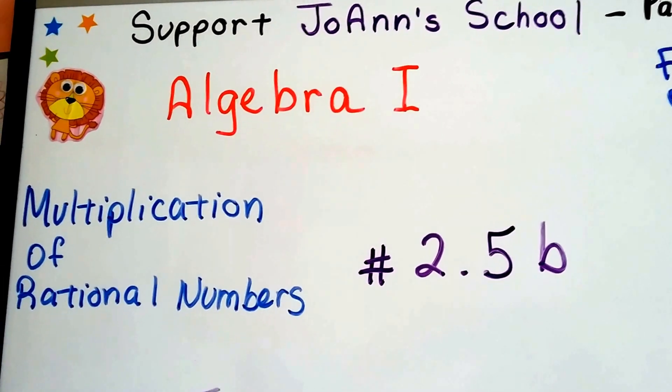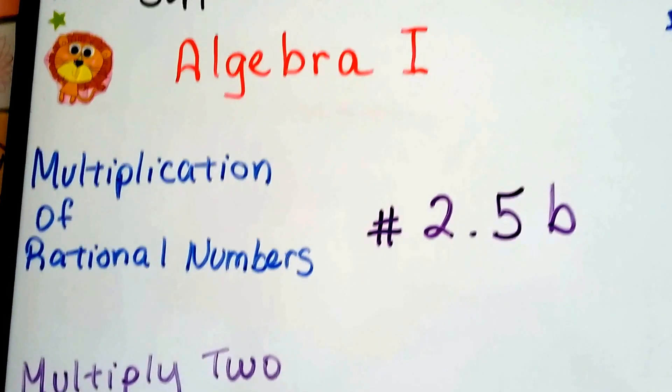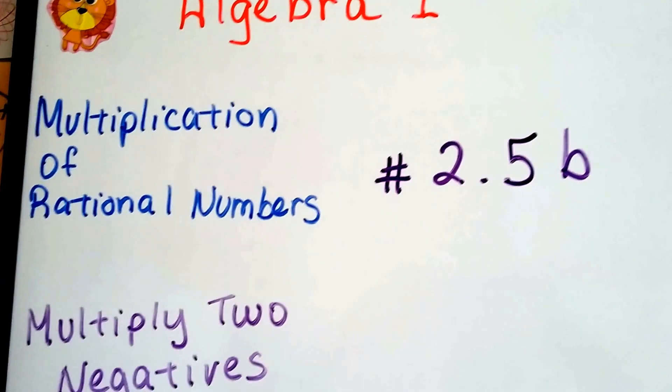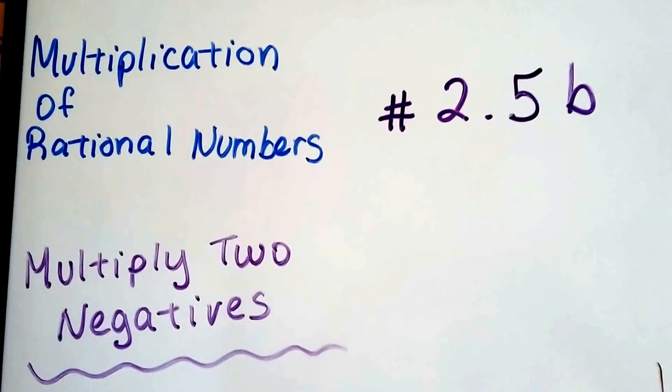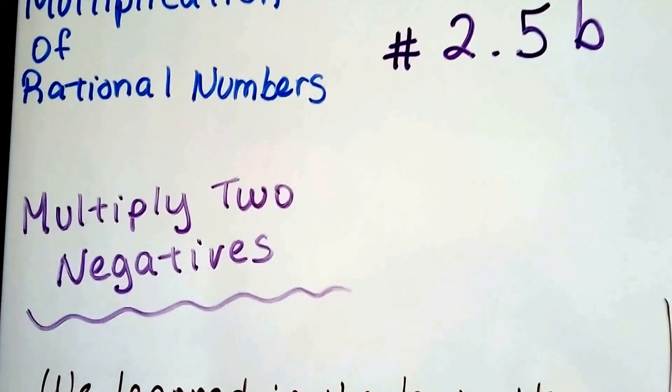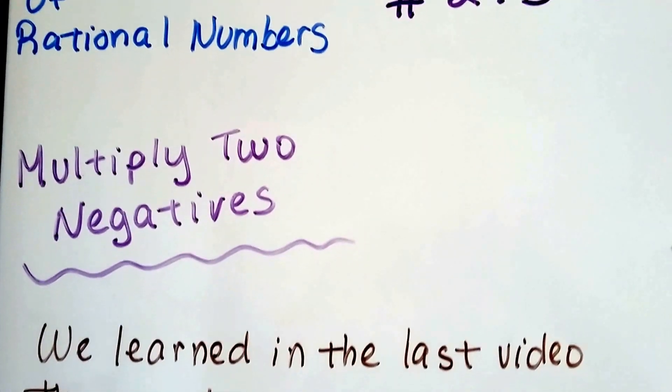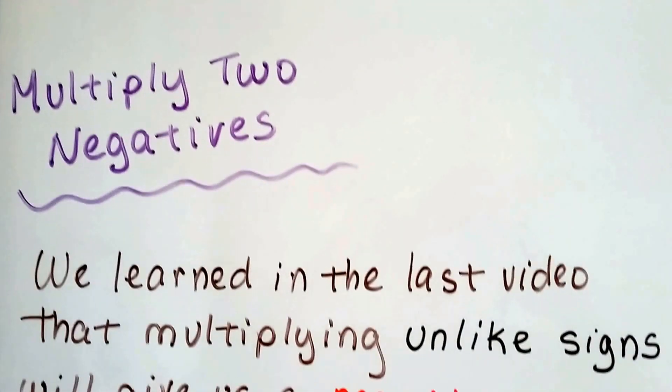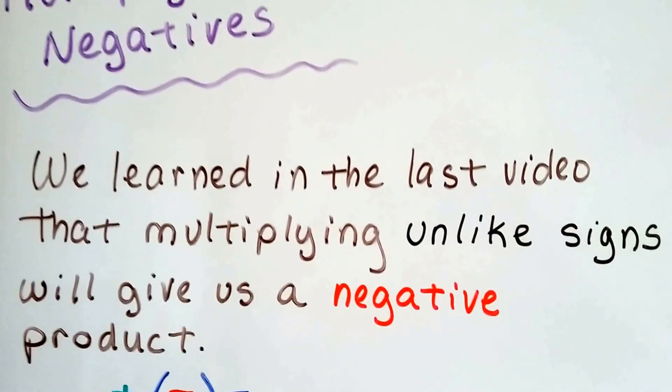Algebra 1, number 2.5b. We're still talking about multiplying rational numbers. Now we're going to talk about multiplying two negatives together.